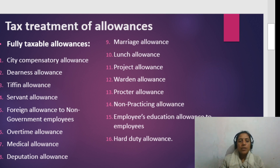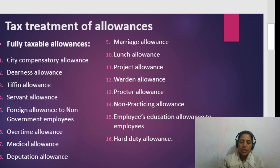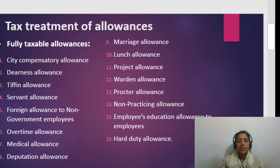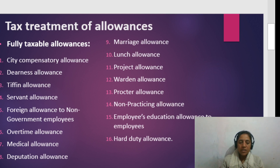First, fully taxable allowances. City Compensatory Allowance (CCA) is fully taxable — it compensates for the high cost of living in a city. Next is Dearness Allowance, which compensates for rising prices and is also fully taxable.